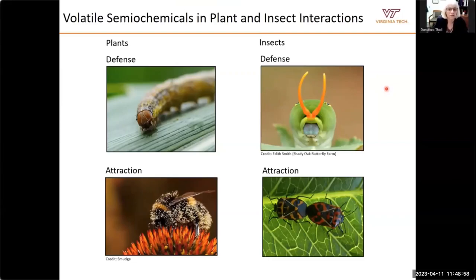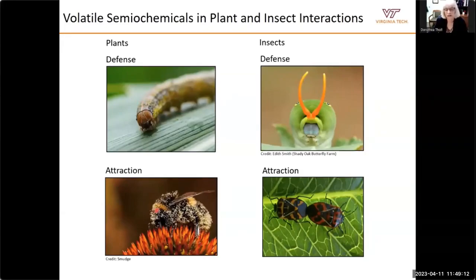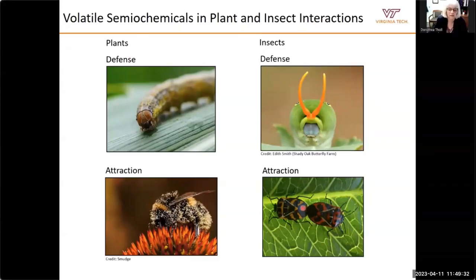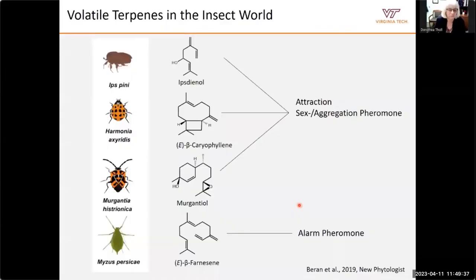Plants can release a large number of volatile compounds in their direct or indirect chemical defense against herbivores, and they can also use volatiles in the attraction of beneficial organisms such as pollinators. Likewise, insects are capable of using volatiles for chemical defense — for example, this larva of the eastern tiger swallowtail butterfly releases volatile compounds from specific defense organs called osmeterium toward predators. Volatile compounds are also hugely important as pheromones in intraspecific interactions of insects.